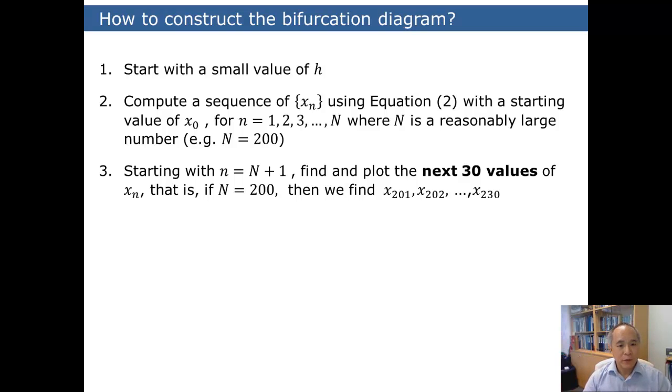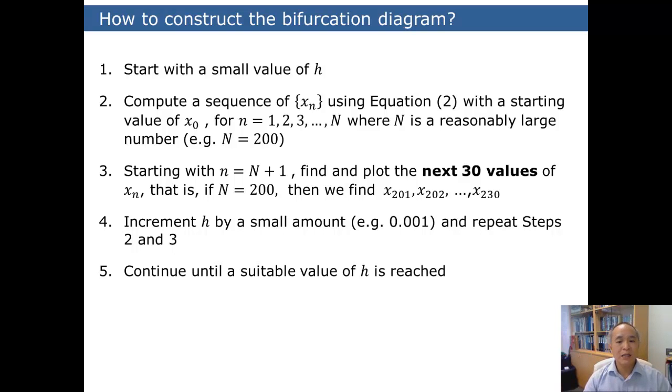Then, starting from that point onwards, we find and plot the next 30 values of x_n. After that, we increment h by a small amount, and we repeat the above two steps, steps two and step three. We will do this until we reach a value of h that we are satisfied with.